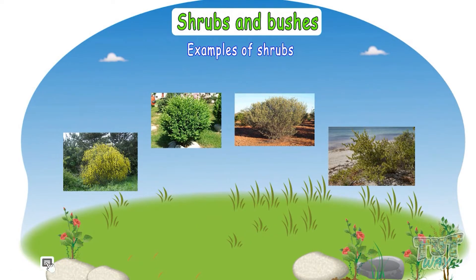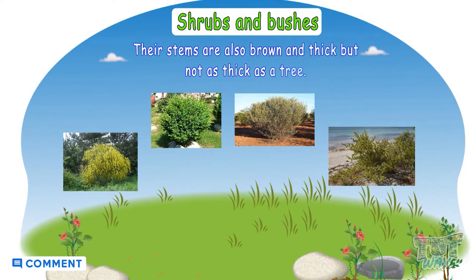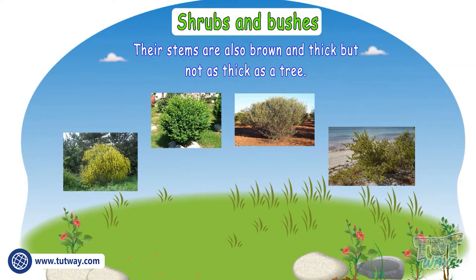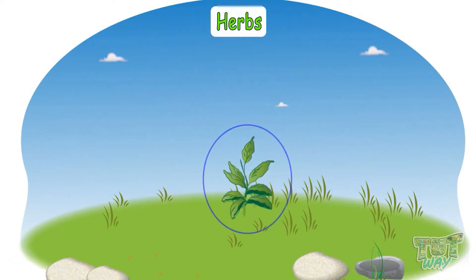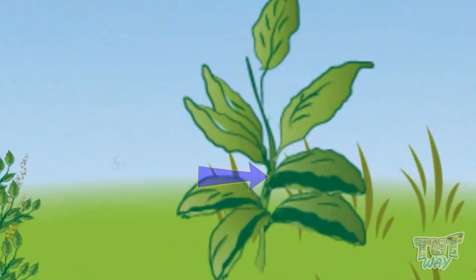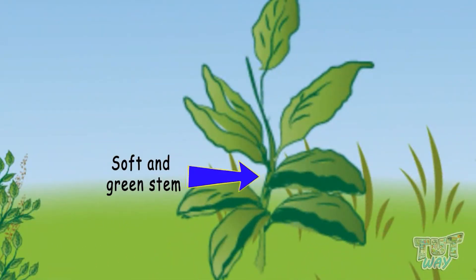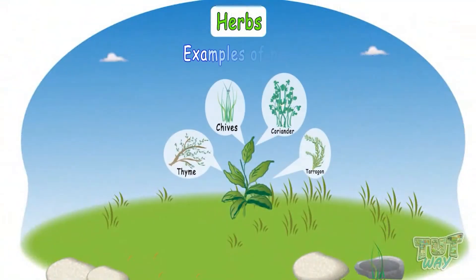These are some examples of shrubs. Look, their stems are also brown and thick, but not as thick as a tree. Now, herbs are very small plants with soft stems. Their stems are not hard and are mostly green in color.